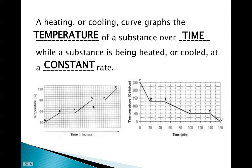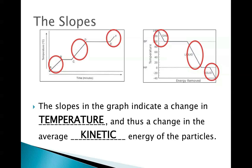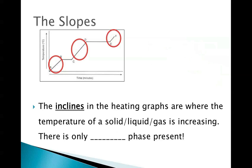So these are two examples. On your left, you have a heating curve as we're adding heat. And on the right, this is a cooling curve as we're taking away heat as time passes. Now there's two main parts. The first part are the slopes combined in a heating or cooling curve. The slopes in the graph indicate a change in temperature, which means that we have a change in the average kinetic energy of the particles.